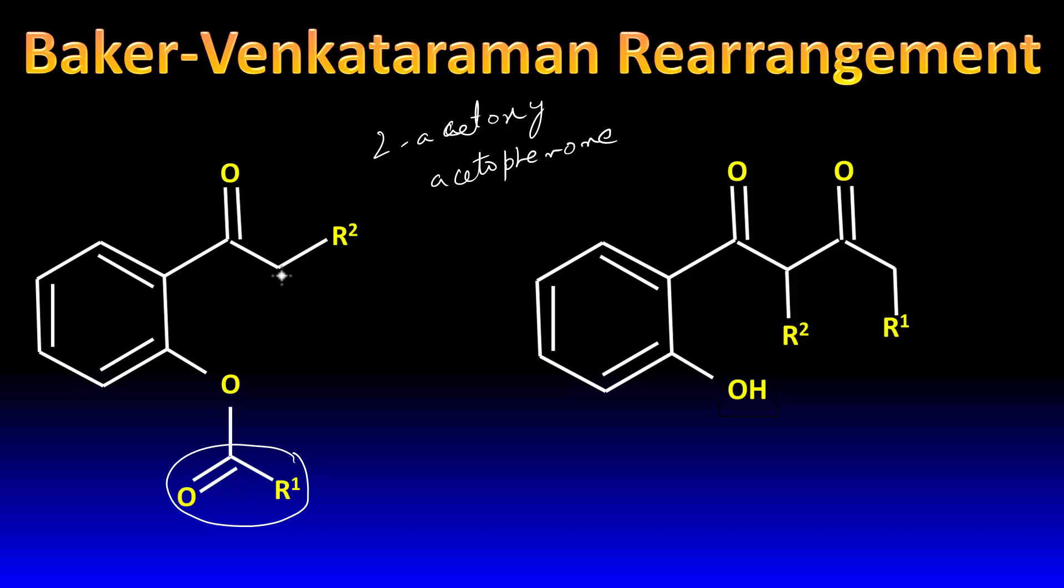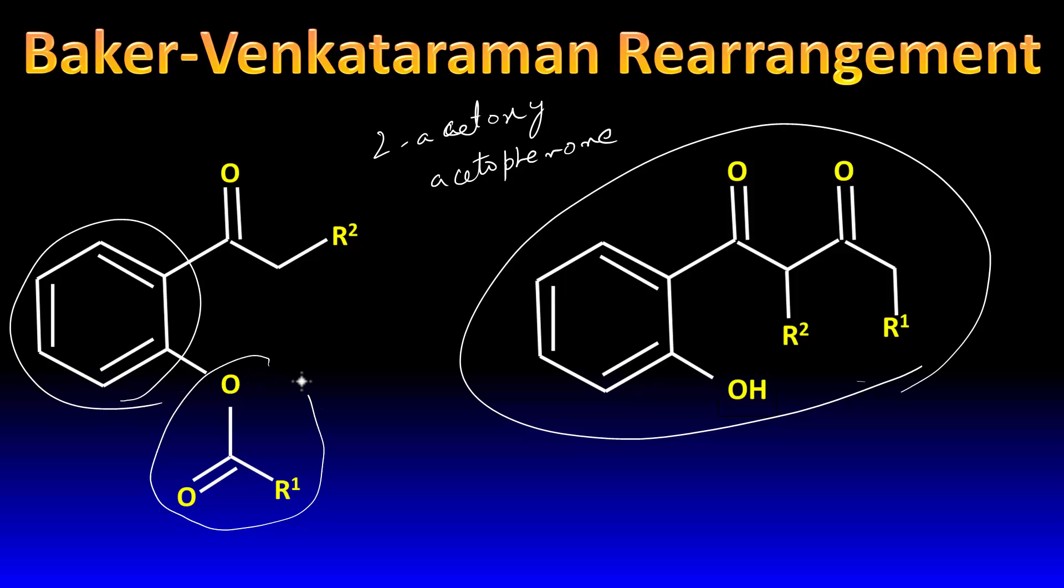This rearranges to give a 1,3-diketone. This happens only in an aromatic system where the ester group, a phenolic ester, is attached at position 2, and at position 1 you have a ketone. The ketone must have an alpha hydrogen, just like in aldol condensation.